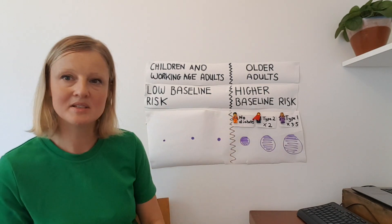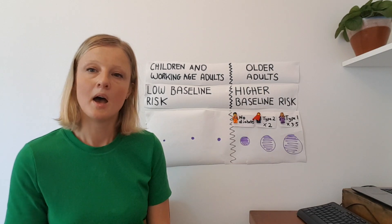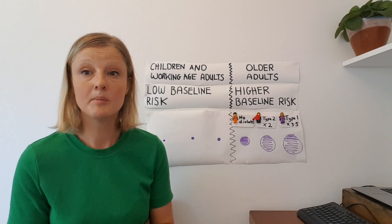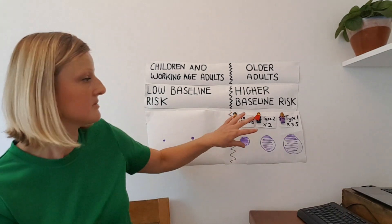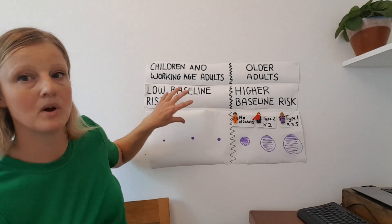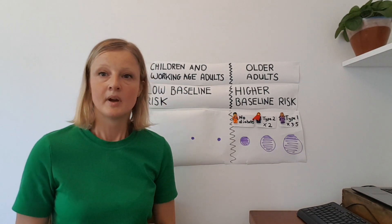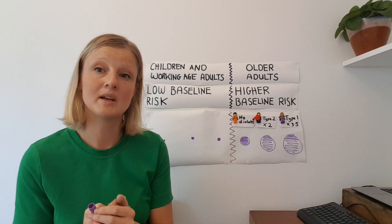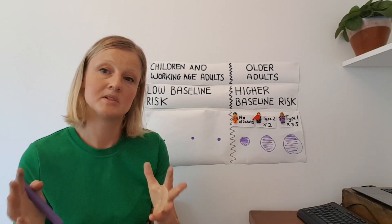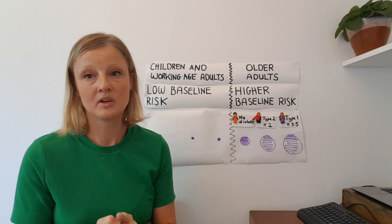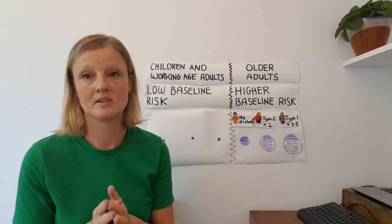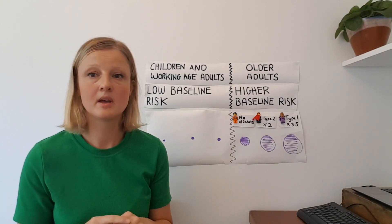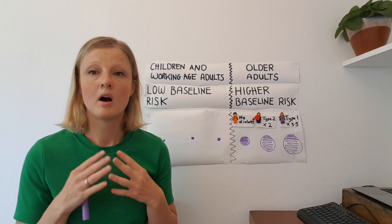I hope this short demonstration helped you understand that while people with diabetes do have an increased risk of dying from coronavirus, this risk is really dependent on your baseline risk and your age. I also hope this helped you understand that there are a few things you can do to help reduce your risk — the main one at this time being to try and keep your blood sugar levels in target range as much as you can.